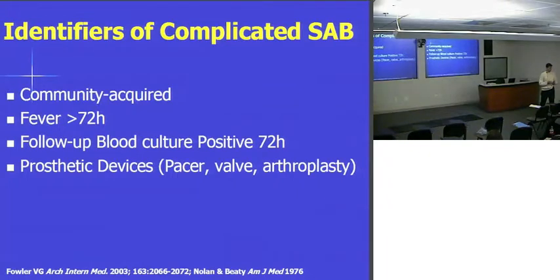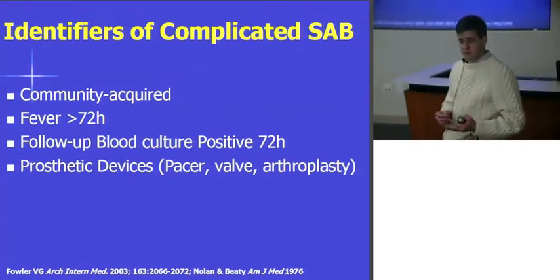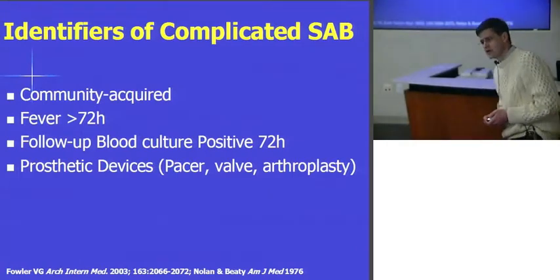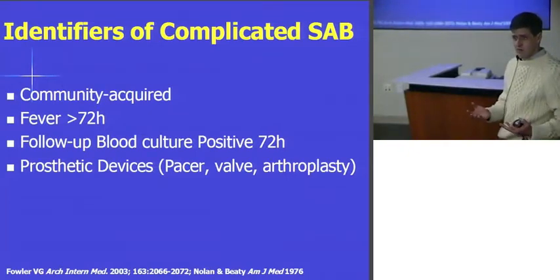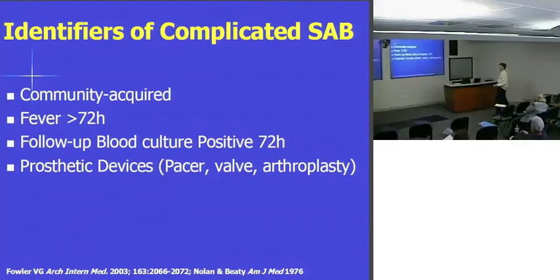Standard of care is: if the device is infected, you take it out. If you want the infection to go away, you've got to make the device go away. If it's just a catheter, that's one thing. But if you're talking about a pacemaker, a defibrillator, a prosthetic valve, an artificial hip — obviously this has a catastrophic impact on the patient. If you can identify up front who you've got to worry about, everybody wins.